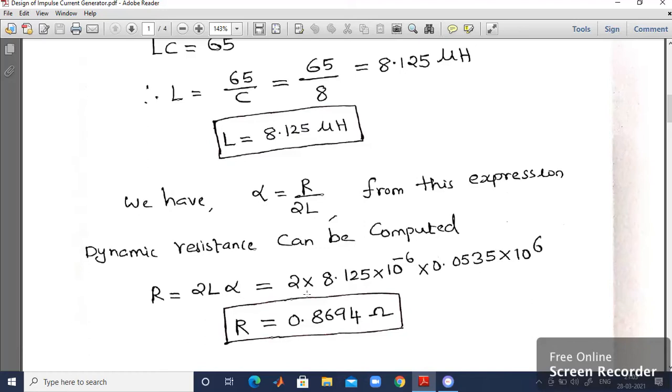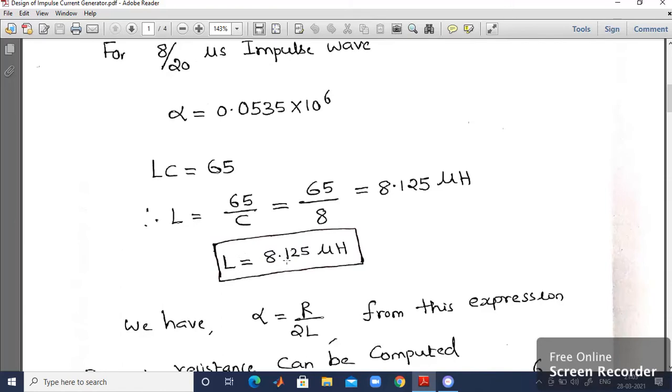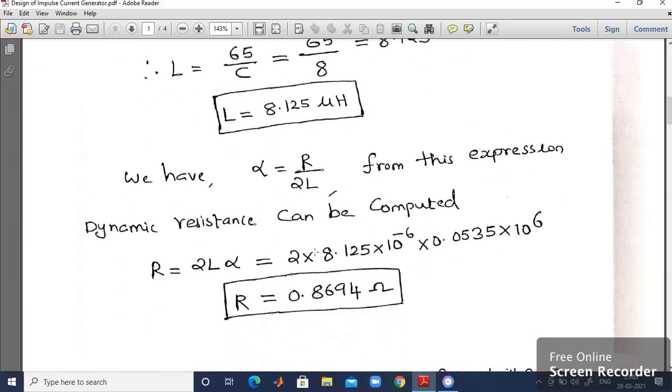Do the cross multiplication then I will be getting alpha × 2L. That is equal to 2L alpha. So L value I have the value of L is obtained earlier. That is 8.125 microhenry. Same value can be substituted over here. Then alpha also can be substituted here. Then 10^-6 × 10^6, that is equal to 10^0. That is nothing but 1.